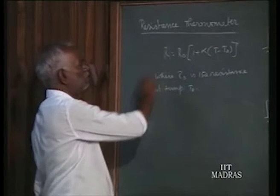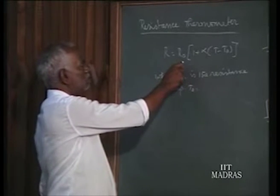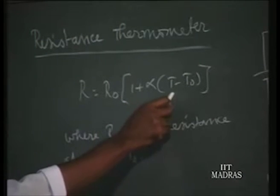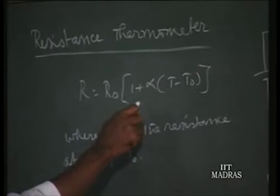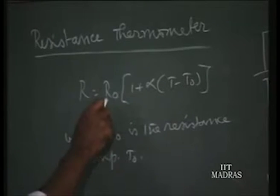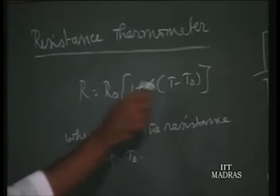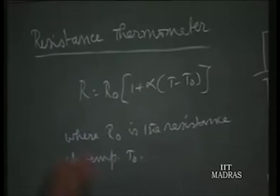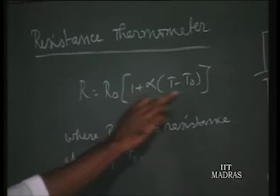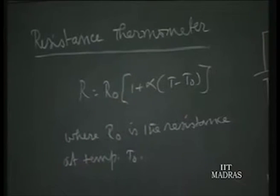Resistance is changed according to this formula: R is equal to R0 into 1 plus alpha. Alpha is the temperature coefficient of resistance into T minus T0, where R0 is the resistance at temperature T0. R is the resistance at unknown temperature T. By using this equation, we get the relation between increased resistance from a known resistance for a given temperature, and for any unknown resistance we can get it.